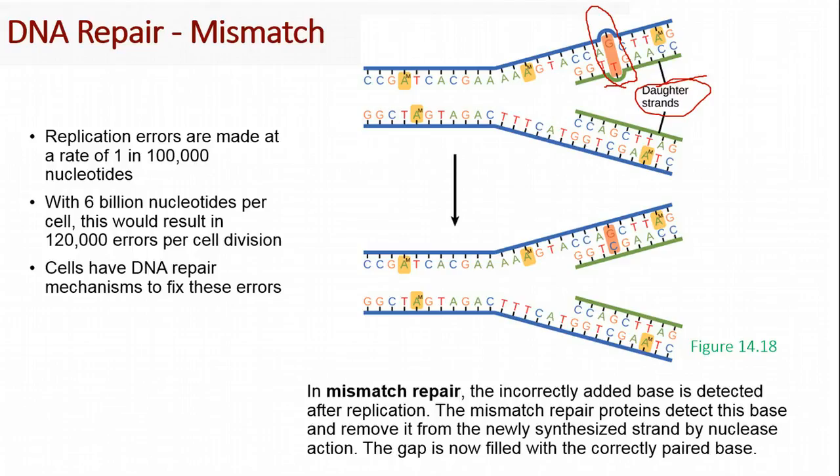So in mismatch repair, we have an incorrect base added, and that's detected by the cell. And then the mismatch repair proteins, which are a set of proteins, they come in and remove this problem mismatch base and replace it with the correct base. And that leads us to what we should have down here, which is a G bound to a C.